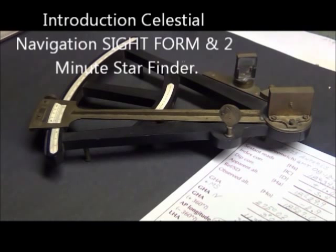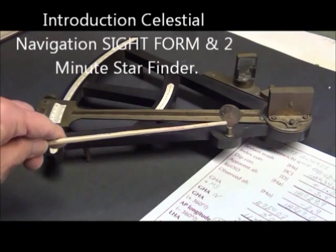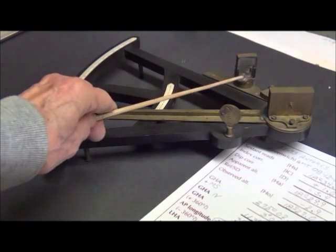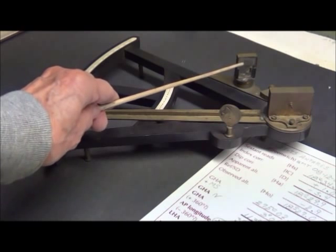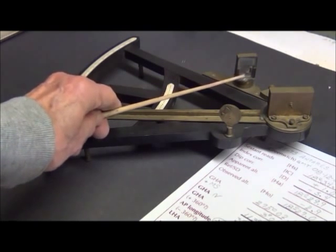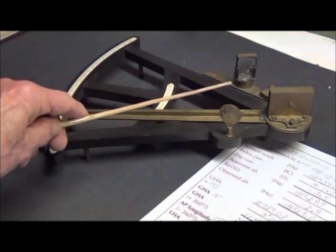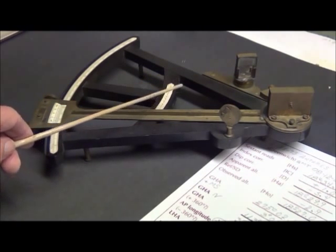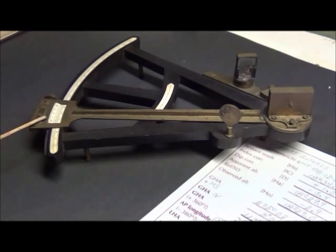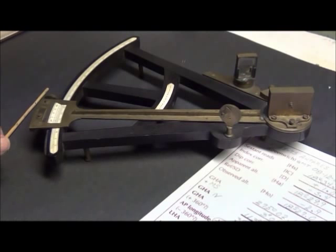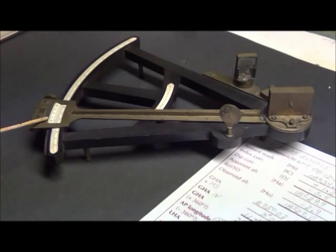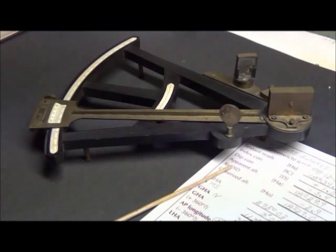Using the sextant, we will look through this pinhole onto this mirror and clear piece of glass, and find a body in the sky. We will bring the body down to the horizon and take a mark, which means read the chronometer, your wristwatch, or whatever timing you have. We will then read the height of that body above the horizon and work the problem. So let's get ready to go into the sight form.